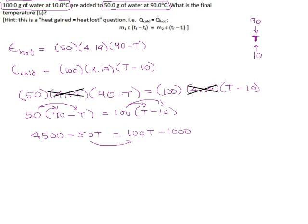This 50 will go over there, so it goes positive, we get 150T. This negative 1,000 goes over here and becomes positive, so we get 5,500.